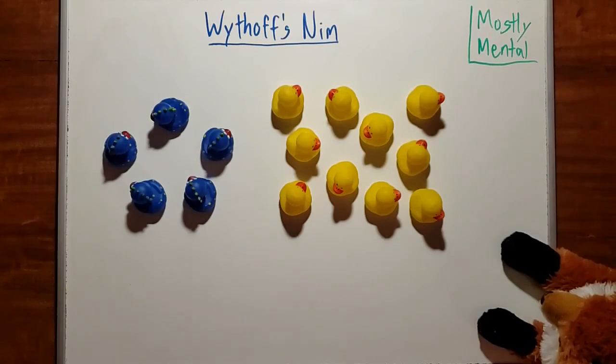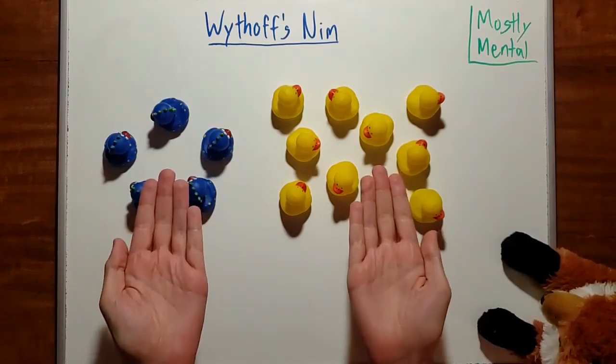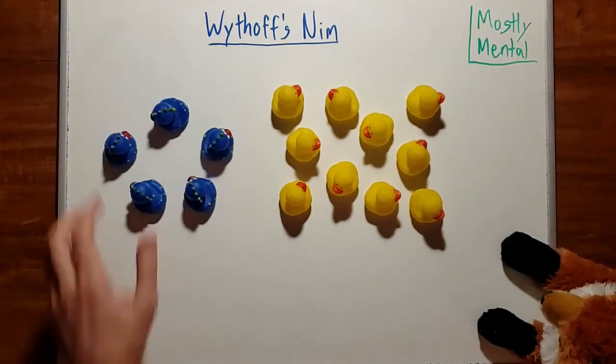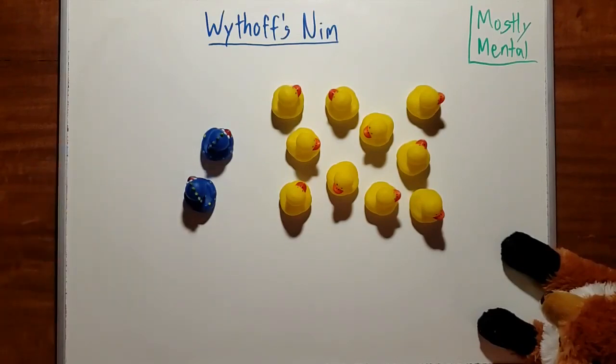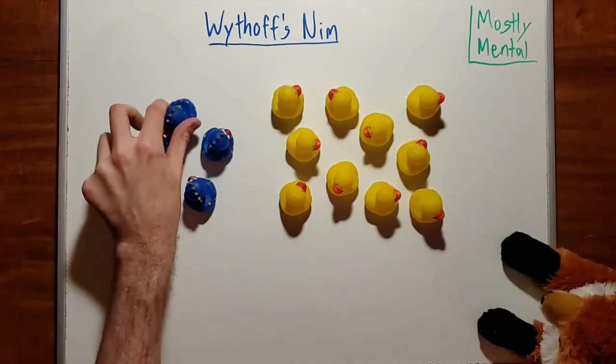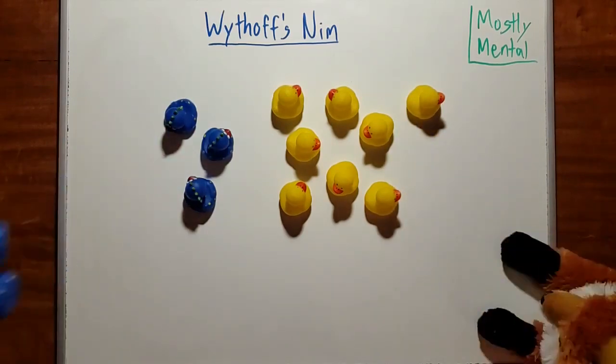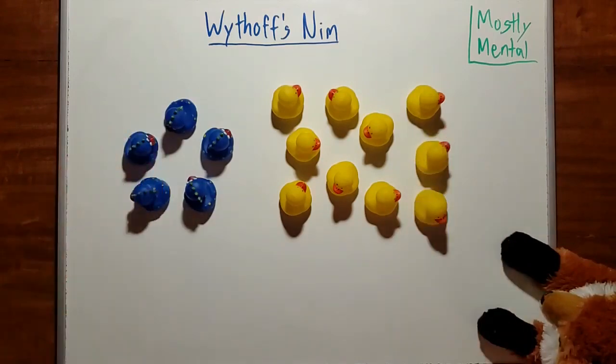It's known as Wythoff's Nim. The rules are pretty simple. We have two piles of ducks, like so, and we take turns removing them. On your turn, you're allowed to remove as many ducks as you want from either pile, or you can remove an equal number of ducks from both piles at the same time. The winner is the player who takes the last duck.